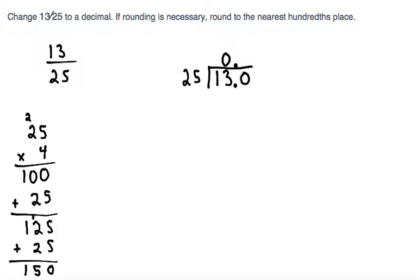125 is smaller than 130, but 150 is too large. So it would be times 5. We can take the 5, multiply it by 25, which makes 125. And then we subtract.